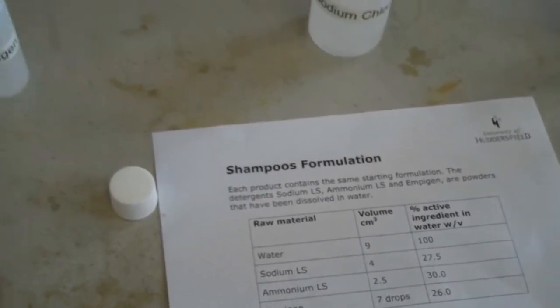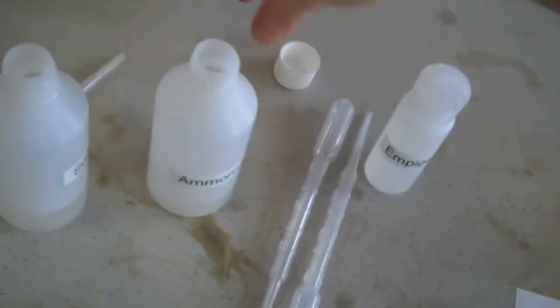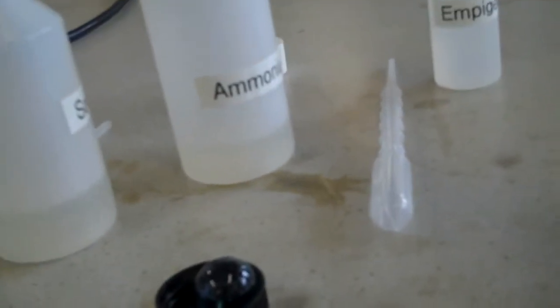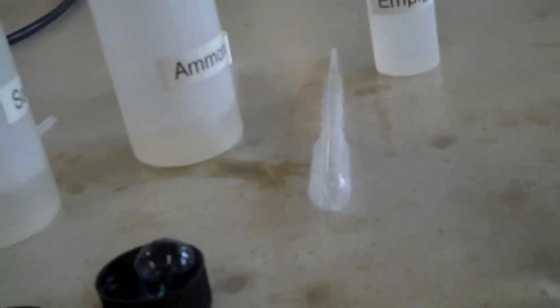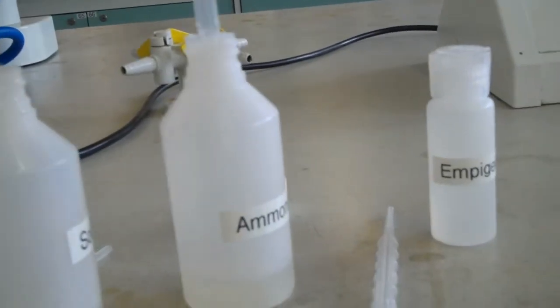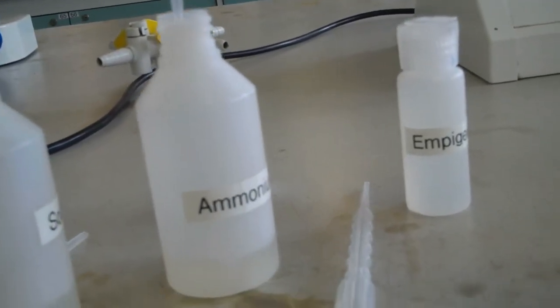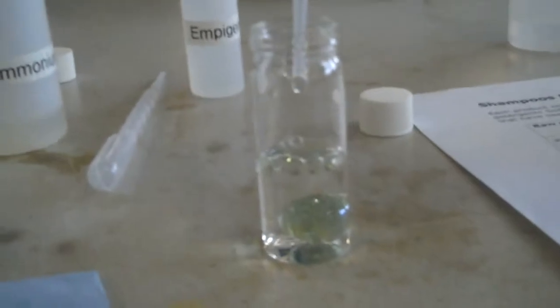I am going to use a different pipette for the next one. So the next one, it says, is two and a half mils of ammonium lauryl sulfate. So I can do this all in my pipette. So I'm taking two and a half of that. There we go. Two and a half into that.